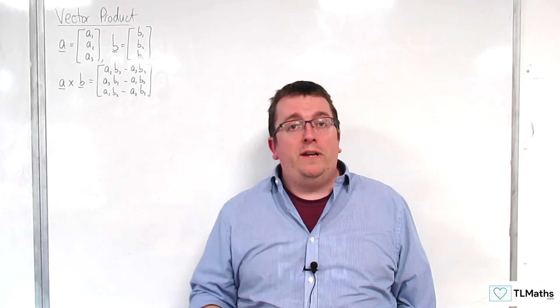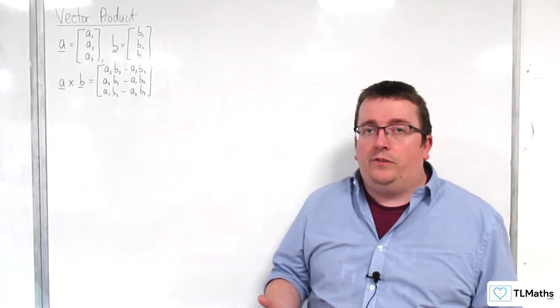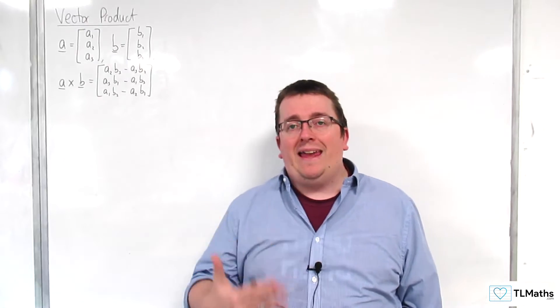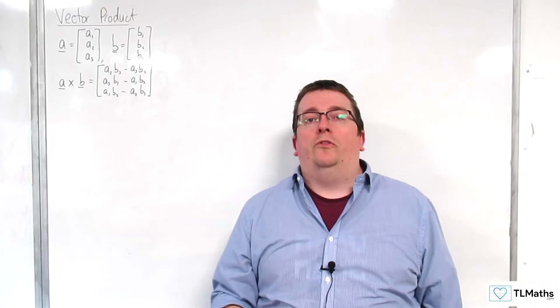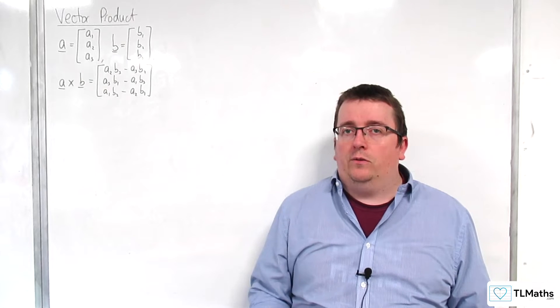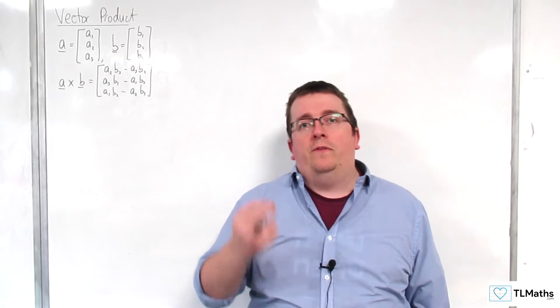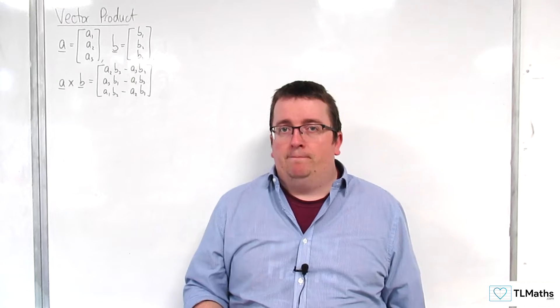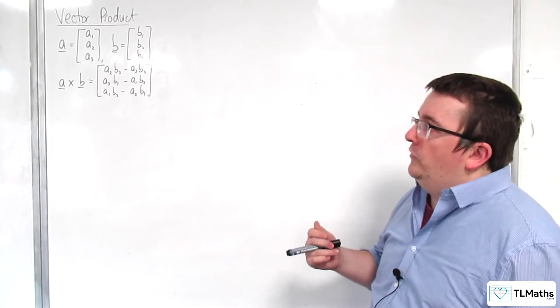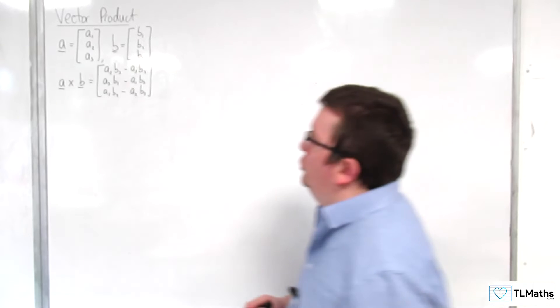In the previous video, we saw an example where I showed you that the length of the vector product of a and b is actually equal to the length of a times the length of b times sine of the angle theta. In this video, I'm going to prove that that is the case generally. This is going to go into quite in-depth, hairy kind of calculations, so you have been warned.